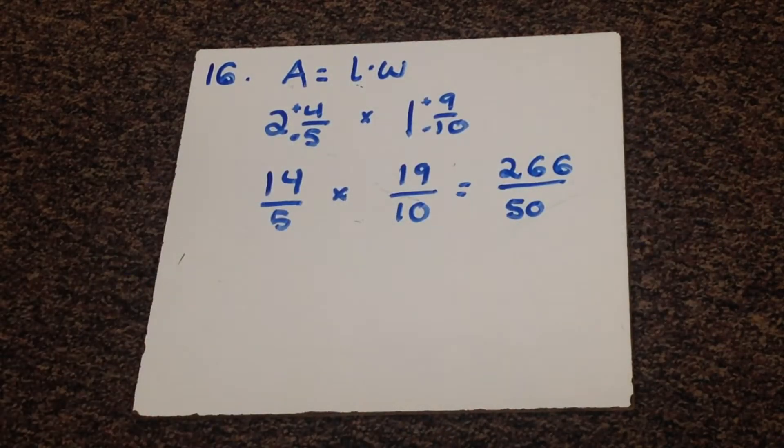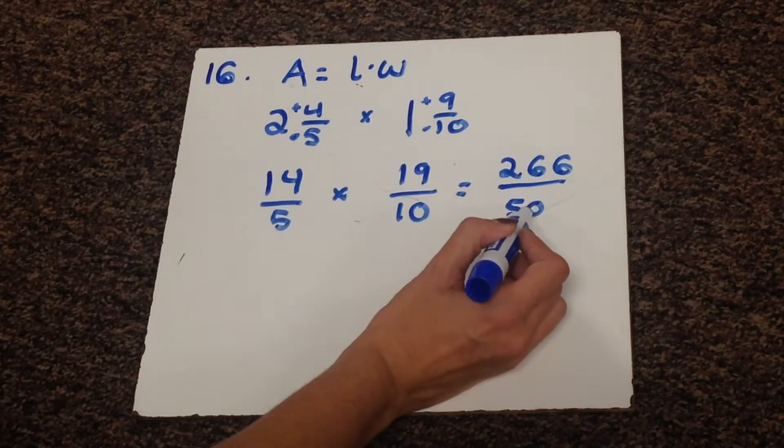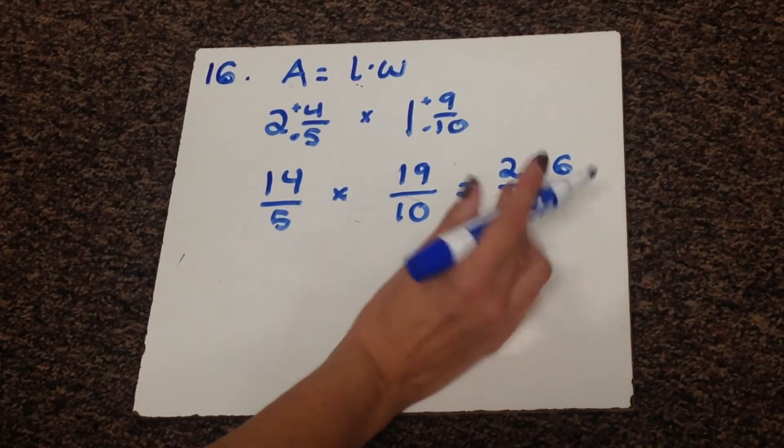Okay, we're not done. That's an improper fraction. We're going to need to change it to a mixed number. So let's see, we have 50. Now there's two routes you can take.